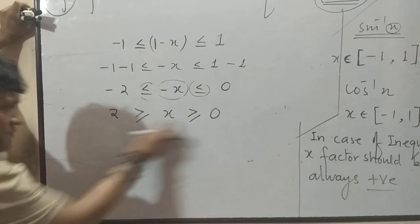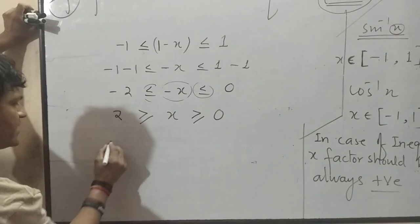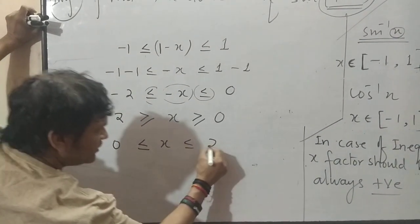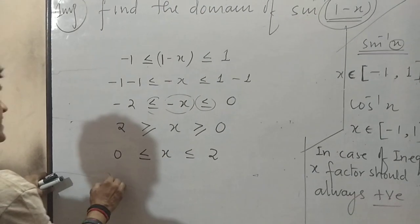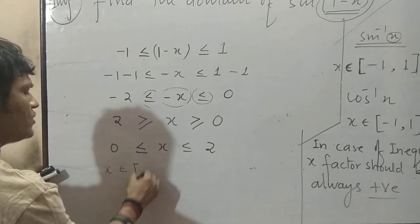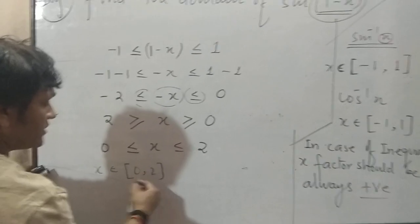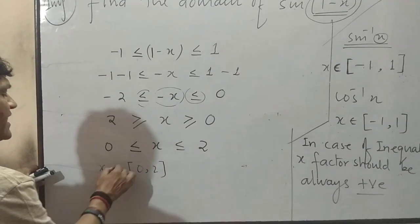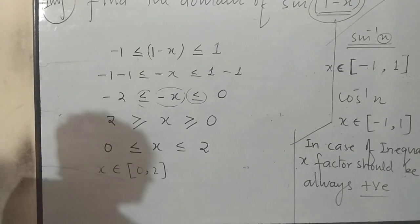The smaller number should be here, the larger should be here. 0 write here, inequality again will change, 2. Clear? Answer will be: x belongs to close bracket 0 comma 2. Don't leave answer here, one mark they will cancel. Always write answer in this notation. Clear?